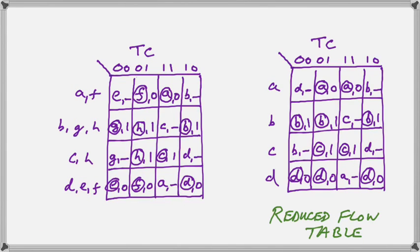Finally, we now change our table so that we replace the AF set with simply A, the BGH with simply B, and the CH with C, and the DEF with D, to produce our reduced flow table.